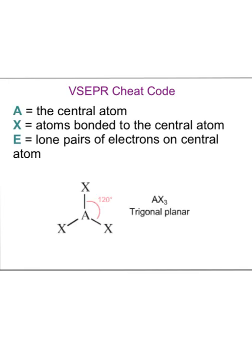Here's an example. Say we have a Lewis structure with A as the central atom and three atoms bonded directly to it with covalent bonds. So AX3 is my code — notice there are no lone pairs on A, so there are no E's. AX3 stands for the geometry trigonal planar. If you have a central atom and three bonded atoms with no lone pairs, it makes this shape every time, with a bond angle of 120 degrees.